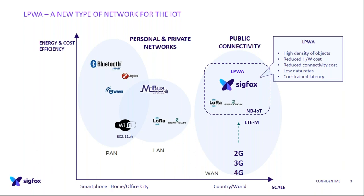LoRa's origin is from the local area network, and inspired by what Sigfox has been doing as a public IoT network, they also moved to that model. Then you have cellular protocols — 2G, 3G, 4G — and standards have evolved to target more IoT use cases: LTE-M as a high-end protocol and NB-IoT as the lower-end one, somewhat competing with LoRa and Sigfox.